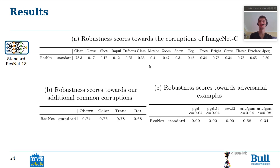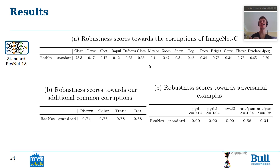If we compute the robustness scores of a standard ResNet-18 that has been trained on ImageNet, and then we test its robustness to the corruptions of our benchmark, we get the following scores. We can see that the standard model is robust to some kinds of common corruptions such as JPEG compression, but it is not really robust to other kinds of corruptions such as Gaussian noise.